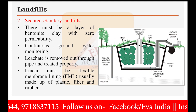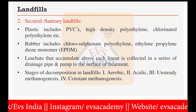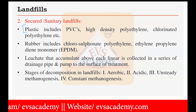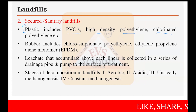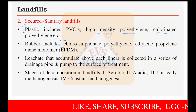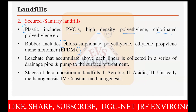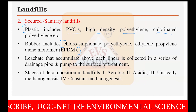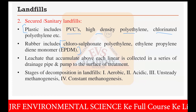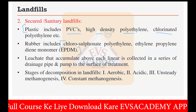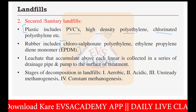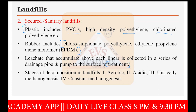The impermeable liner in secured landfills can be plastic such as PVC (polyvinyl chloride), high-density polyethylene, or chlorinated polyethylene. Rubber options include chlorosulfonated polyethylene and ethylene propylene diene monomer (EPDM) — two types of synthetic rubber. Leachate that accumulates above each liner is collected in a series of drainage pipes and pumped to the surface treatment facility.